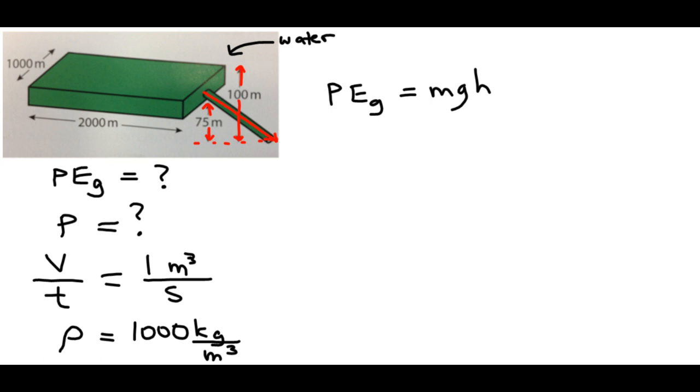So which do we use? Do we use 75 meters or 100 meters? Well, the spout, we assume, is positioned smack dab between the two. So the height that we use is the average height. And this gives us 175 over 2, and that's 87.5 meters. Now, we know the value of h. We know the value of g. Can we calculate the gravitational potential energy? No, because first we have to find the mass.